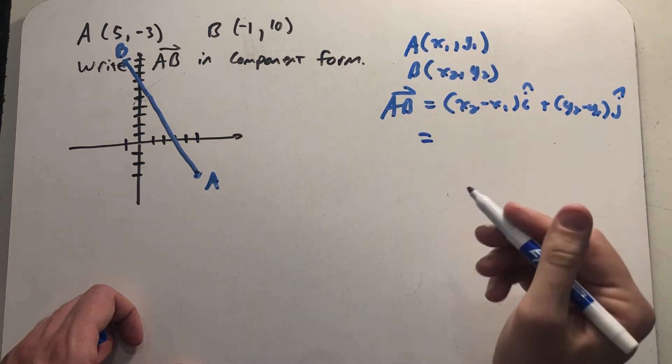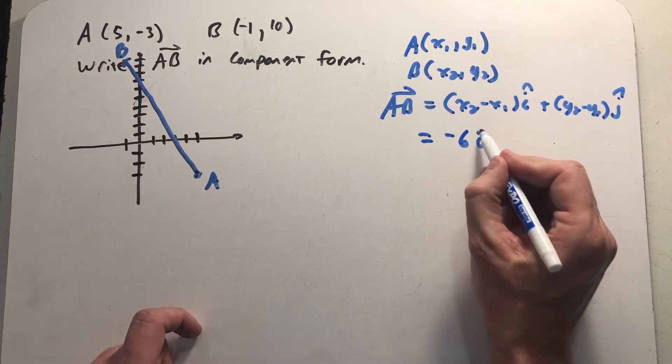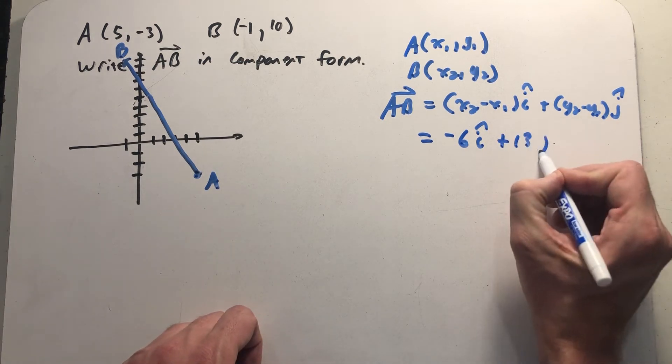Our vector AB is then minus 1 minus 5 is minus 6i, and then 10 minus a minus 3 is 13j.